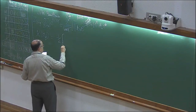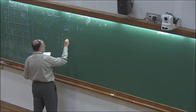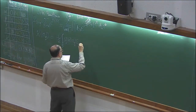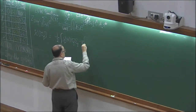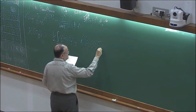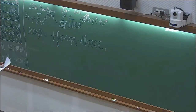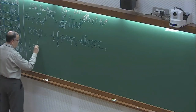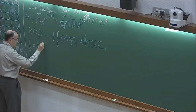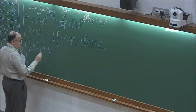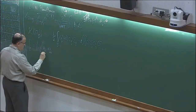Here is the Landau-Ginzburg-Wilson form we will be using. It is an integral over q of (q squared plus r) sigma_q sigma_{-q}. The notation: integral over q stands as a short form for 1 over (2 pi)^d times the integral d^d q over the first Brillouin zone.